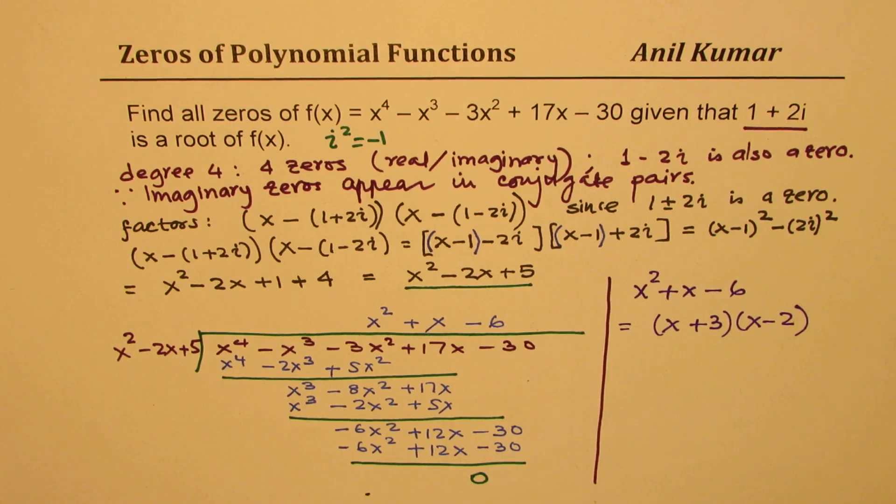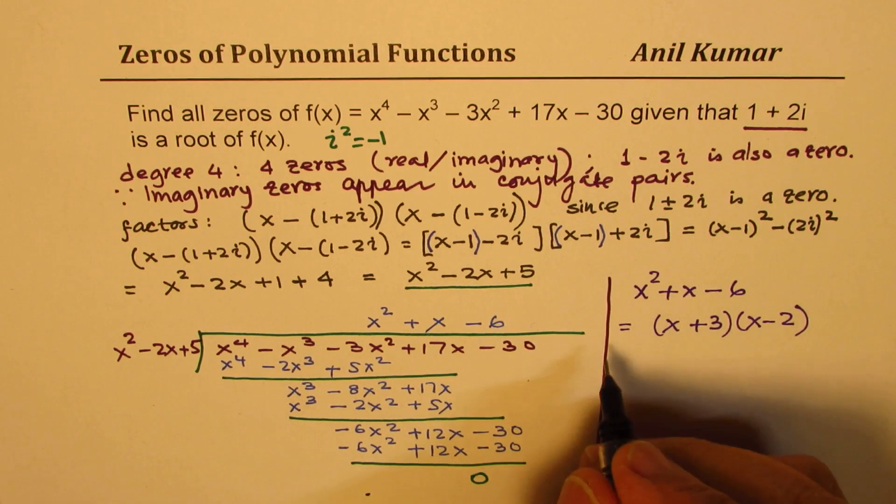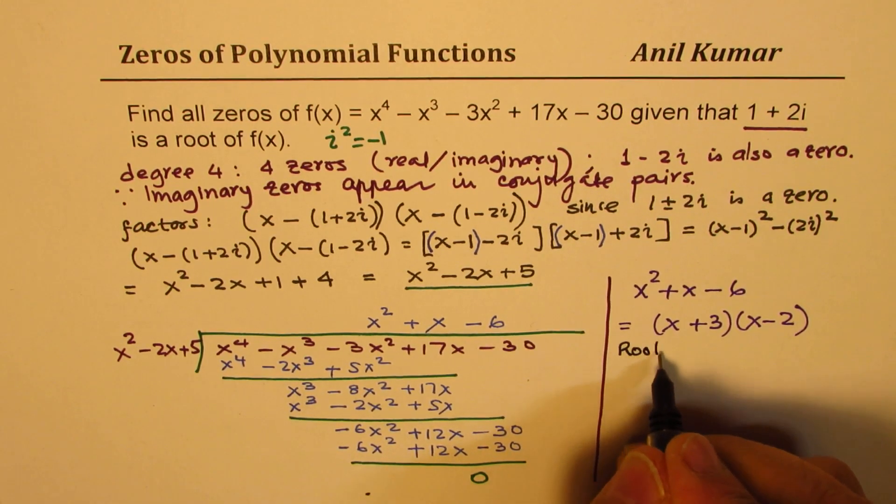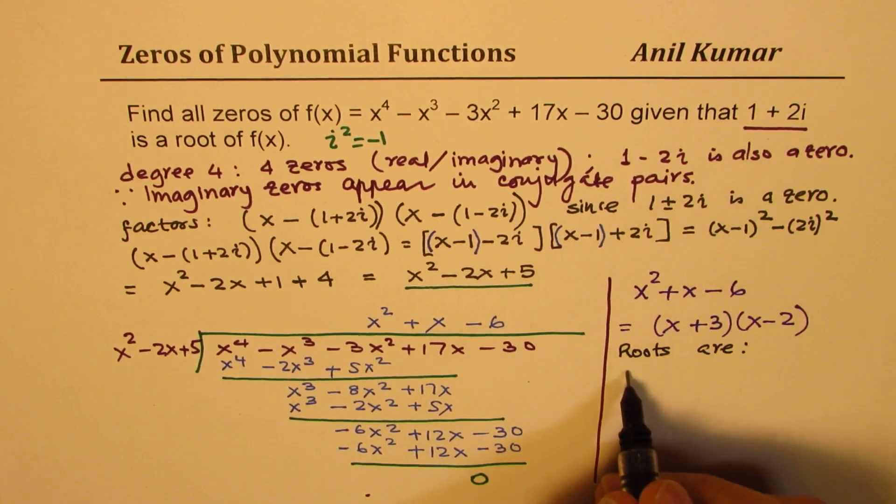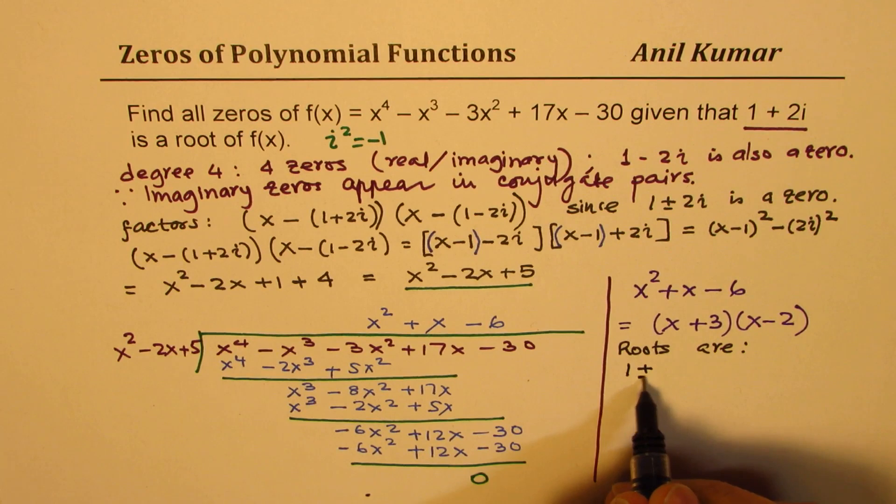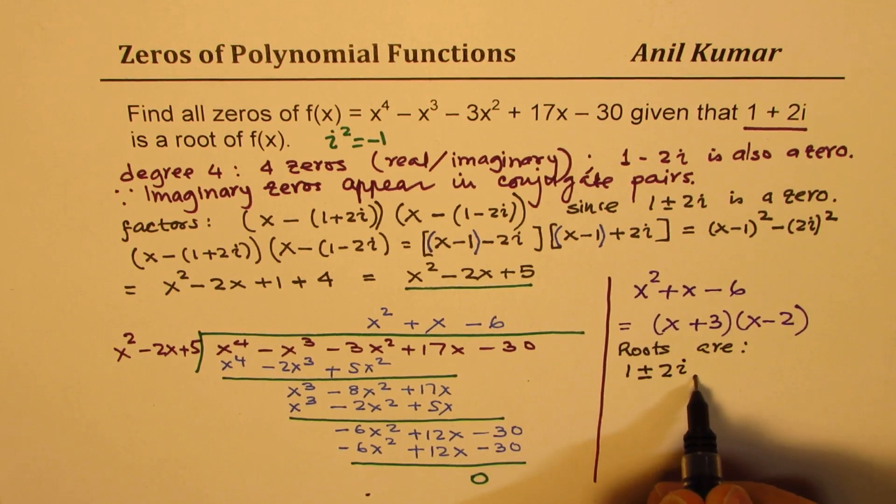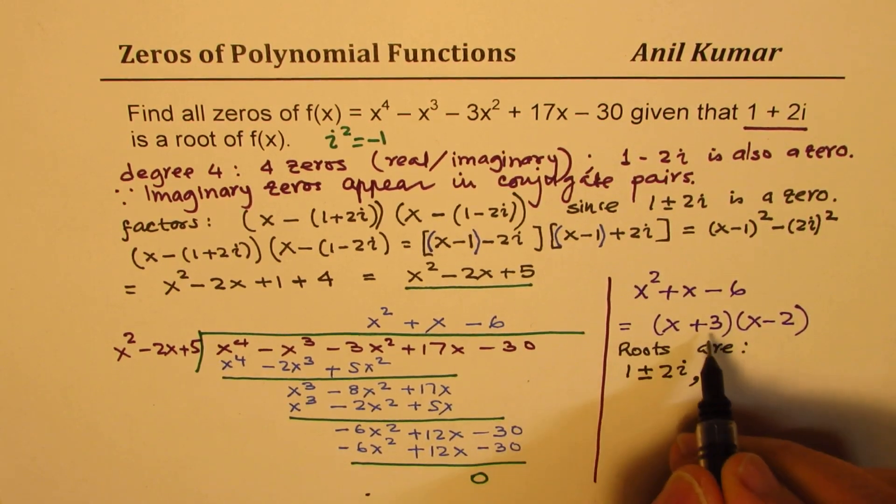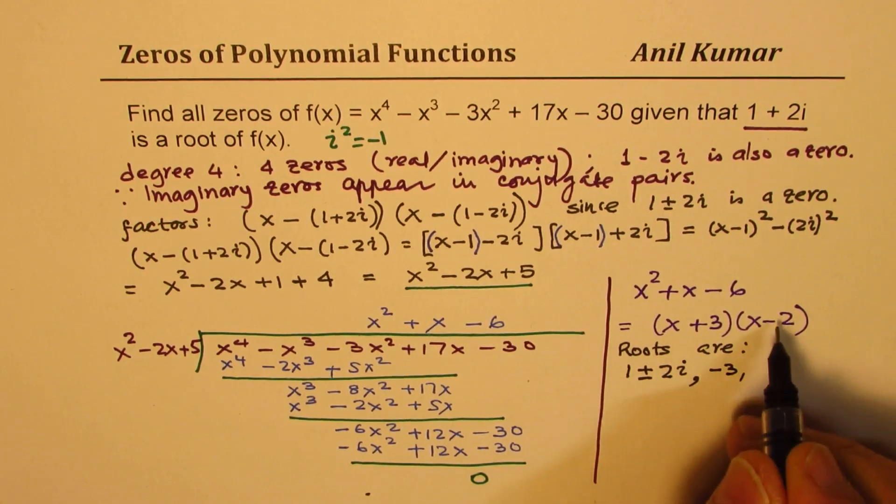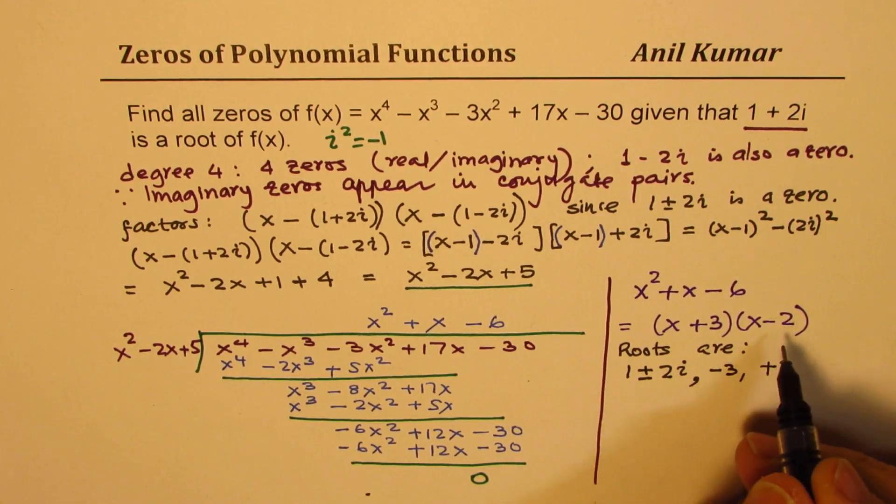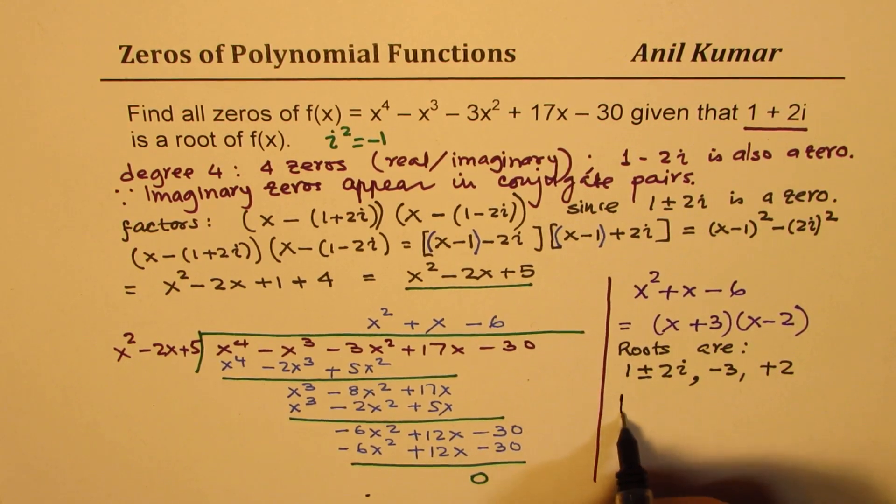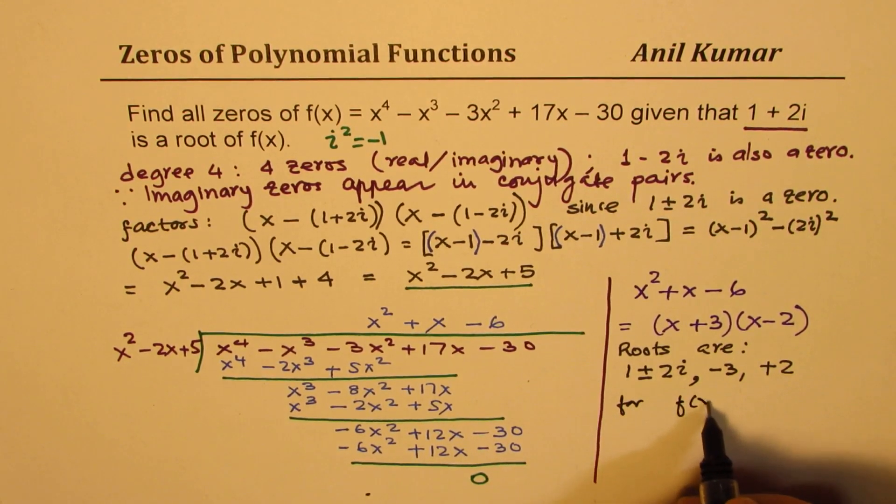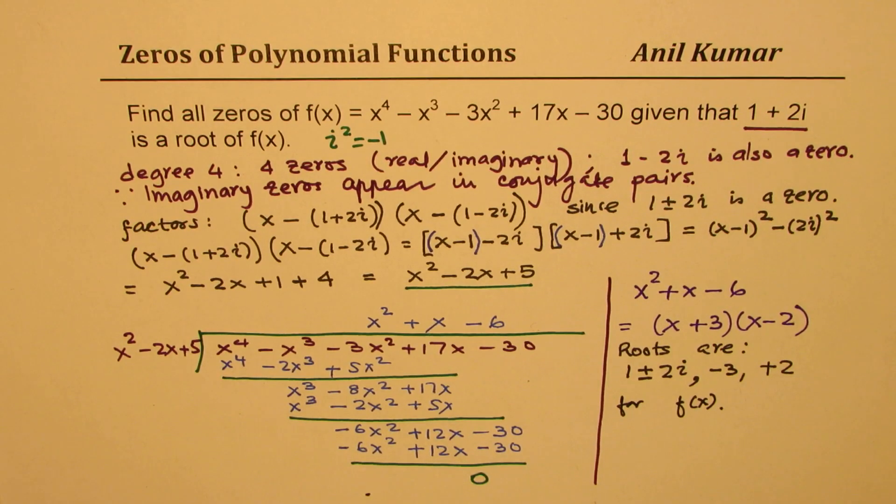So now we can write down the answer that the roots are: we are already given 1 + 2i and 1 - 2i, those are the two complex conjugate roots. And here we get -3 and then we get 2. So whatever makes this 0 are the roots. So roots are this for f(x). That is how we can actually solve such a question.